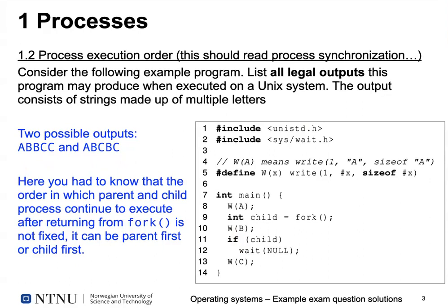A student asked: would a legal output be produced if the fork call fails? That's a good question. If you noted that in your answer, we would certainly accept it, but we should probably add a note that you should assume the fork call wouldn't fail, to make the question more clear. Thanks, that's a good comment.